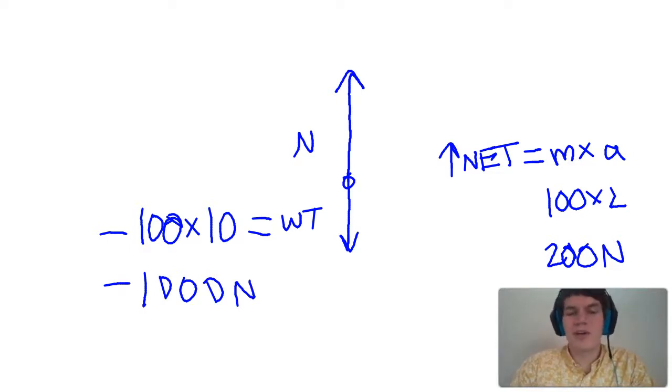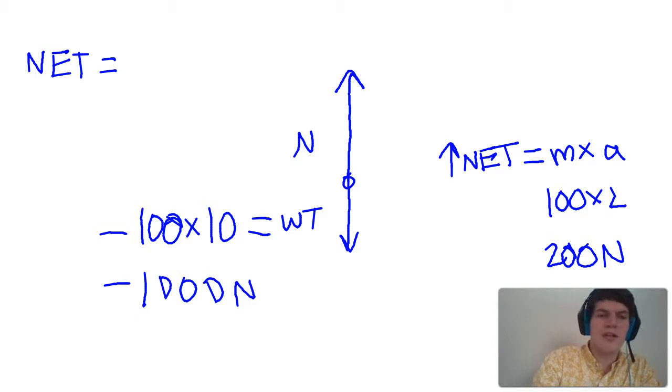Now how do all these forces relate to each other? Well, using our free body diagram we know that the net force is equal to the normal force plus the weight. Now let's just plug and chug. The net force is 200 newtons.